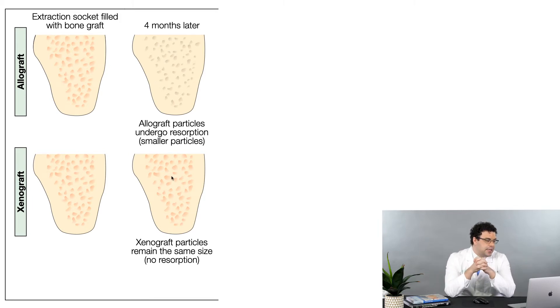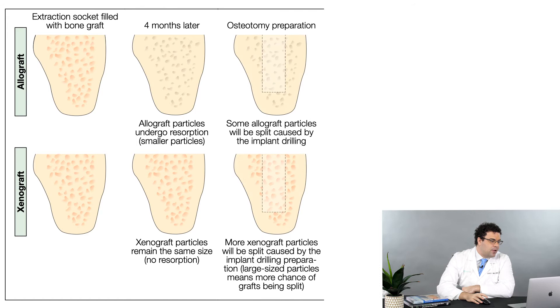In the image, you'll notice that at four months, the allograft is resorbed — the particles are getting smaller. The xenograft particles, on the other hand, remain the same size.